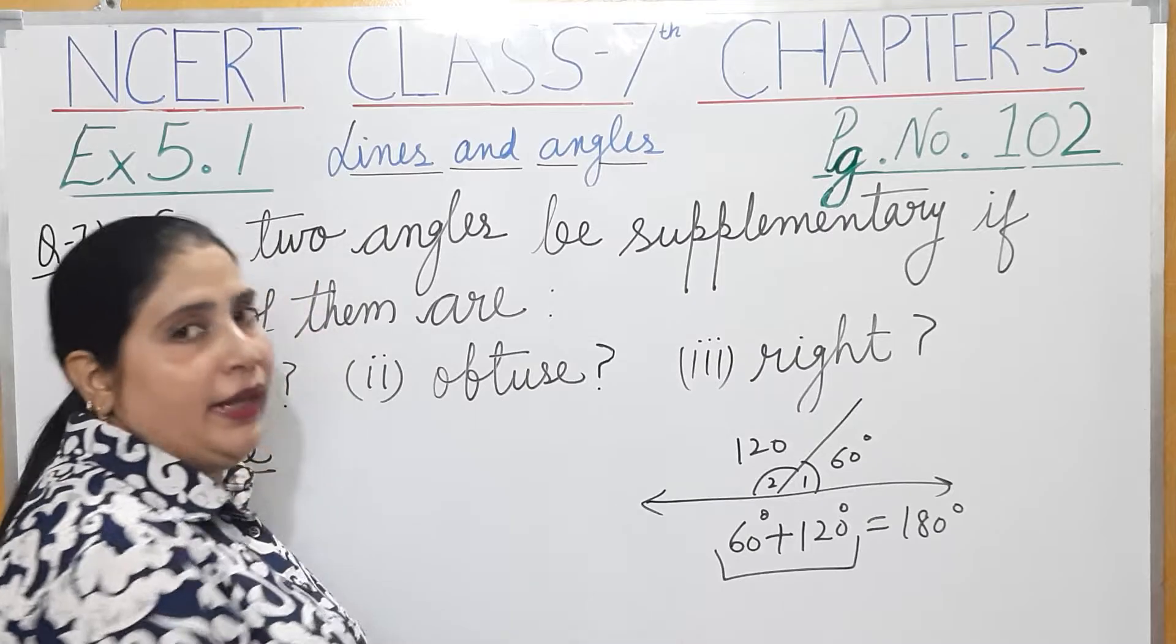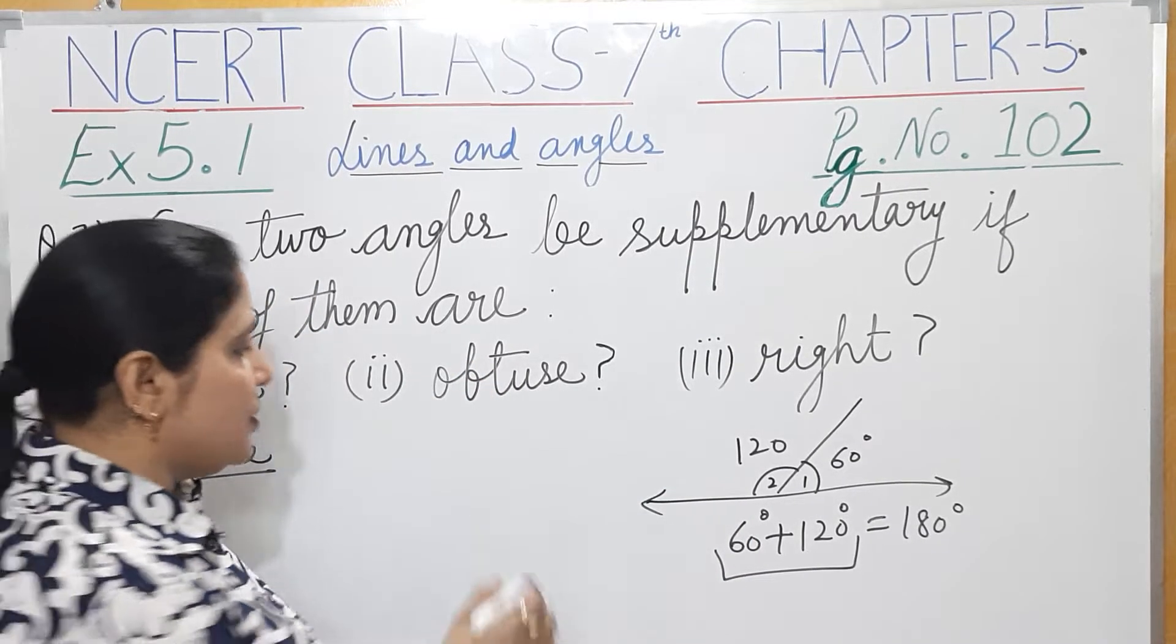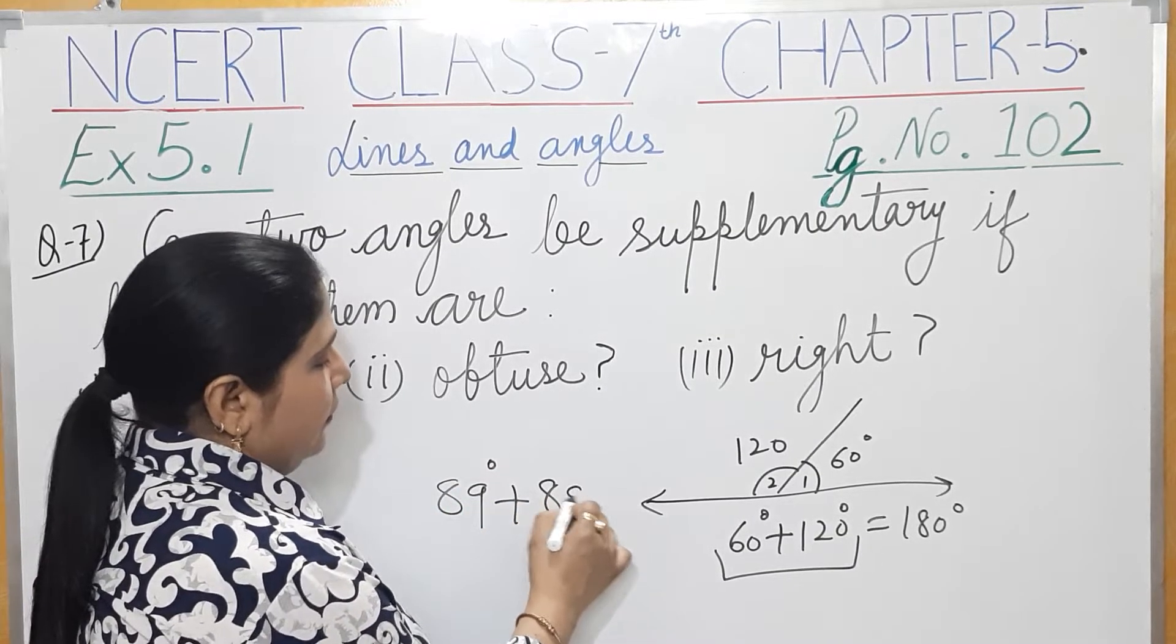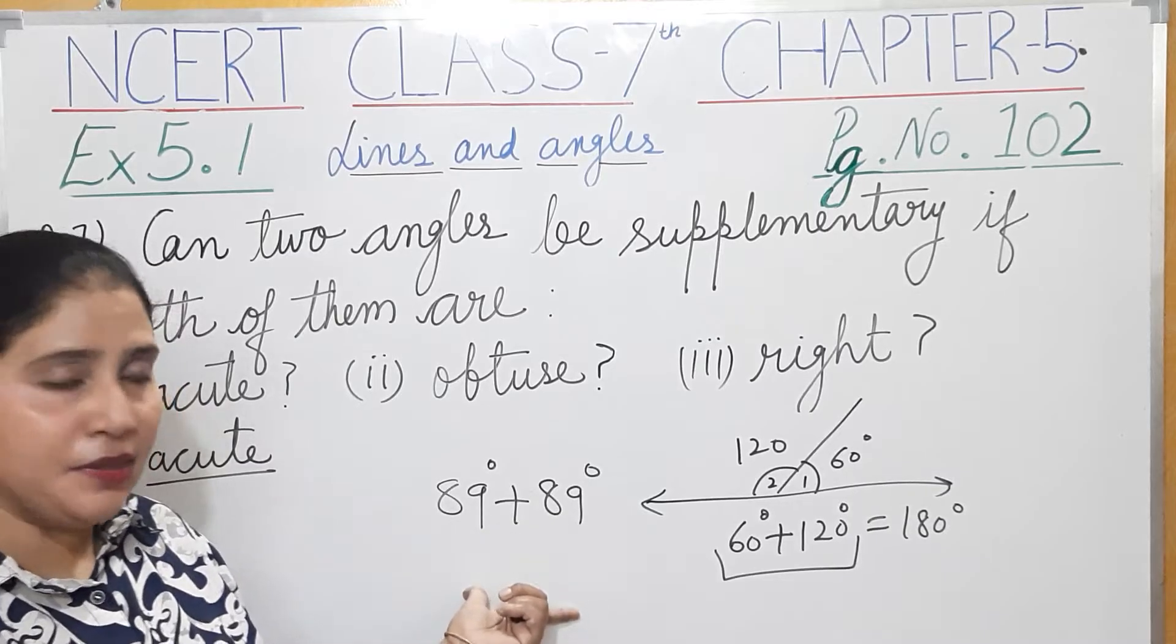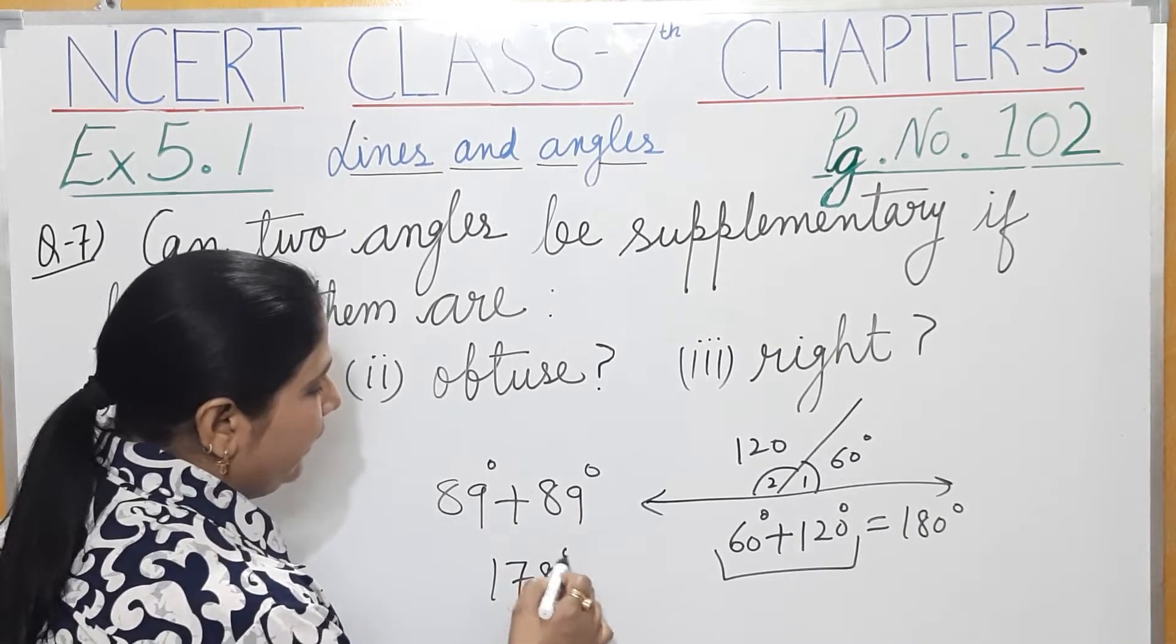If we take two angles, let's suppose just less than 90 degrees - 1 degree and 89 degrees. These two angles - they are all acute angles, less than 90 degrees. How much is it? 90 degrees.